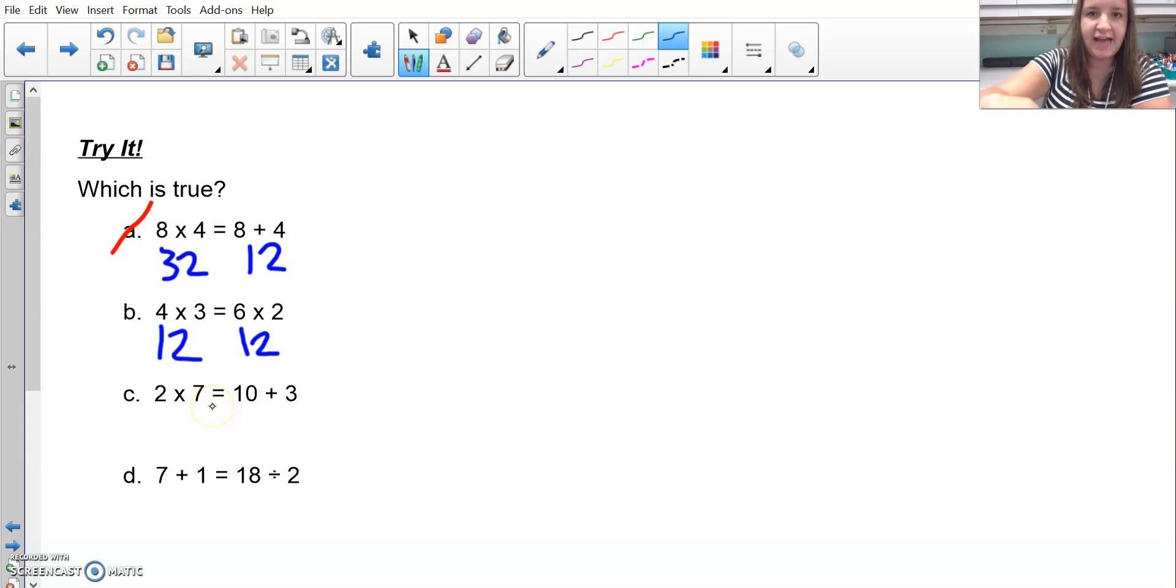C has two times seven, which is 14. Then over here, I've got 10 plus three, which equals 13. Those numbers are very close to each other, but they are not equal. So this would not be true.